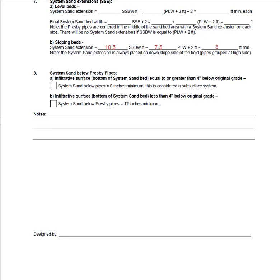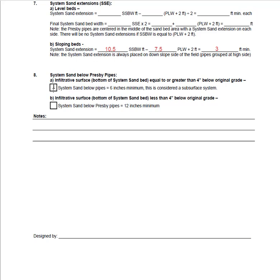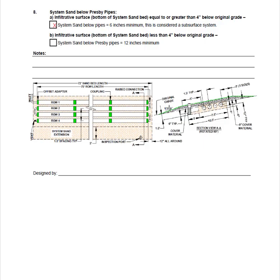The last step, step eight, helps us determine how much sand will be required beneath the pipes. If the bottom of the system sand bed is greater than four inches below grade, the system is considered a subsurface system and only needs six inches of sand beneath the pipes. If the bottom of the sand bed is less than four inches below grade, it is considered an elevated system and will require 12 inches of sand beneath the pipes. For our example, our system was a subsurface system. Any additional information you want to include about your system design can be added in the notes section at the bottom of the worksheet. A drawing of the design we just completed is also included, which can be found in your design and installation manual under example number two.